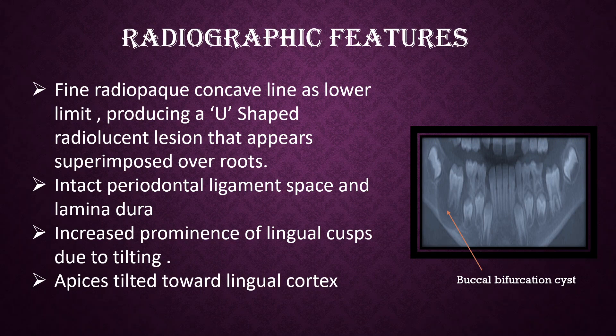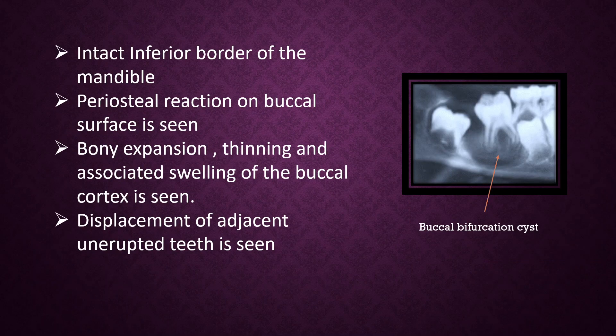Radiographic Features: A fine radio-opaque concave line as the lower limit produces a U-shaped radiolucent lesion that appears superimposed over the roots. Intact periodontal ligament space and lamina dura. Increased prominence of lingual cusps due to tilting. Apices tilted toward the lingual cortex.